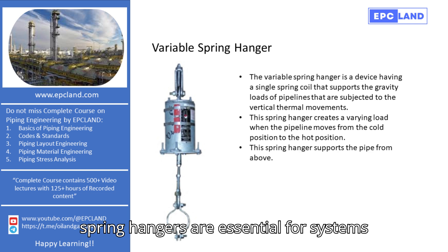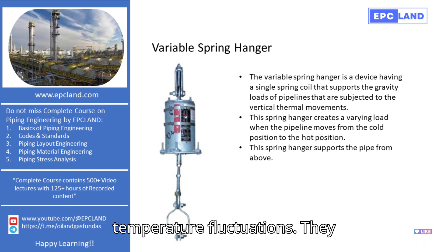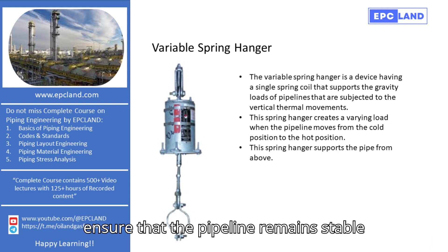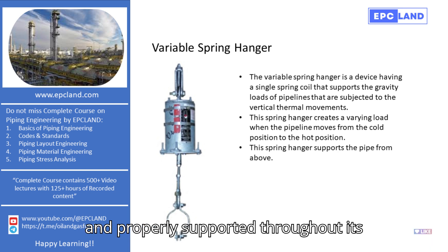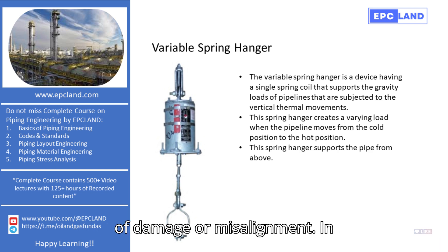Variable spring hangers are essential for systems where pipelines experience significant temperature fluctuations. They ensure that the pipeline remains stable and properly supported throughout its thermal cycle, thereby reducing the risk of damage or misalignment.